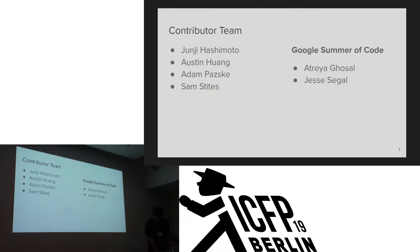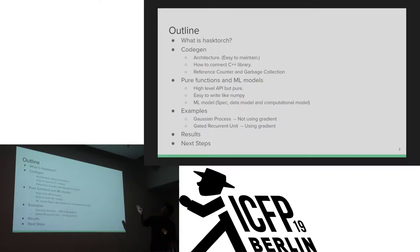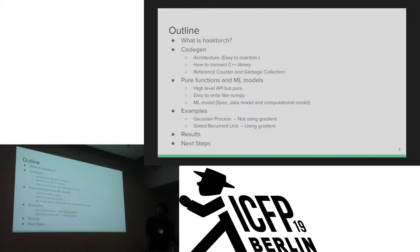Today's outline: first, what is HasTorch; second, I show the low-level architecture; next I show high-level APIs — they are pure functions and provide machine learning models; and finally, I show an example using HasTorch.